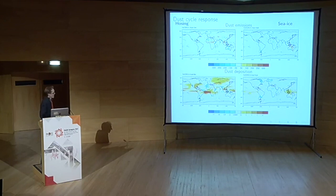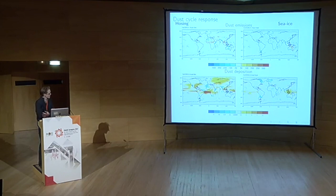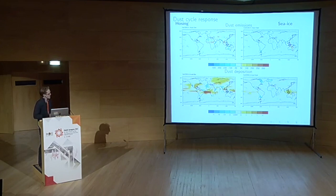Dust deposition shows big increases across much of the globe in the hosing scenario, much smaller changes in the sea ice scenario. Notably, the model gets only about a 50% increase in Greenland dust — not even the fourfold increase mentioned from the ice core records, let alone a tenfold increase. The hosing scenario, even with the dynamic vegetation response, doesn't reproduce the dust increase seen in the records.